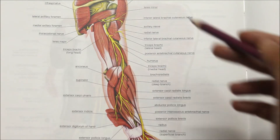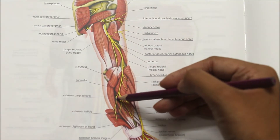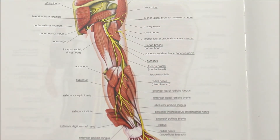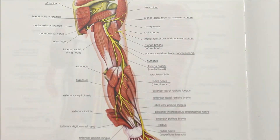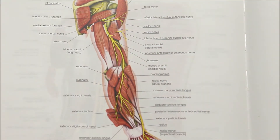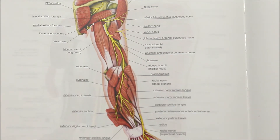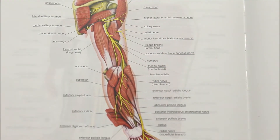Hello guys and welcome back to my channel. In this video we will be learning about the radial nerve. This is a posterior view of the right upper limb. The radial nerve is a nerve in the human body that supplies the posterior portion of the upper limb. It is the largest branch of the posterior cord of the brachial plexus. The root value of the radial nerve is C5 to C8 and T1.